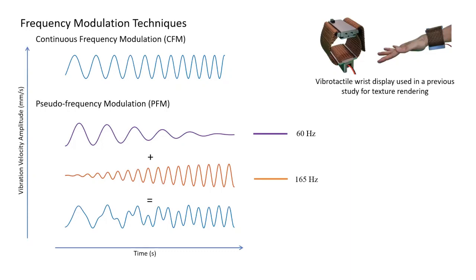In our previous study, we created an illusion of continuous frequency change by changing only the amplitudes of two frequency components. We called this technique pseudo-frequency modulation and explored it for only one frequency combination.